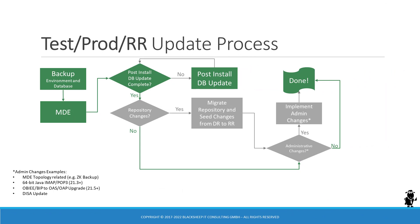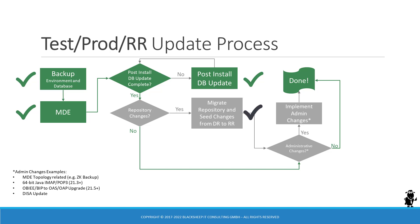The same is true for test or production environments, also known as RR environments, where the update process is a little shorter. The mandatory steps are the same: back up your environment, run MDE, run the post-install database update. If there's nothing else to do, you're done. Of course, you have to repeat the update process on every Siebel instance. If the development environment update included repository changes, you have to use the migration application to deploy the new and updated artifacts from the development environment to the runtime environment. You might also have some administrative changes on your checklist to execute before declaring the update complete.